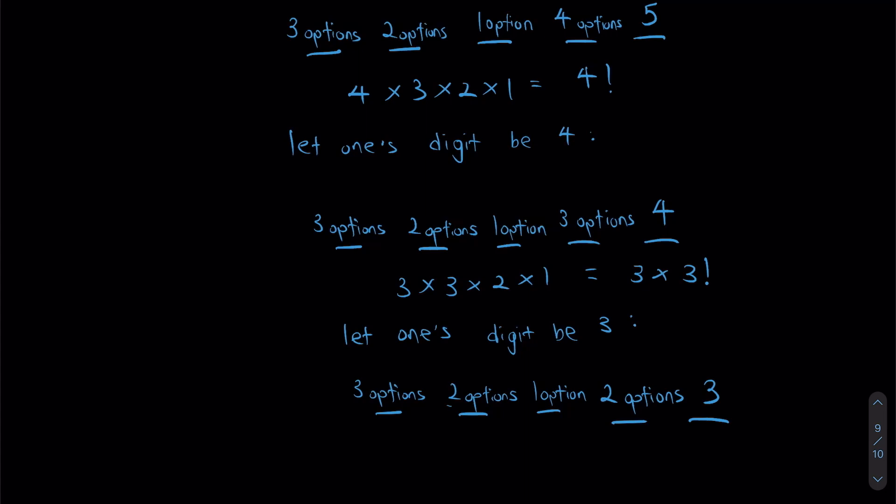And once again we multiply our options. We have 3 × 2 × 1 × 2. I can rewrite this as 2 × 3 factorial.